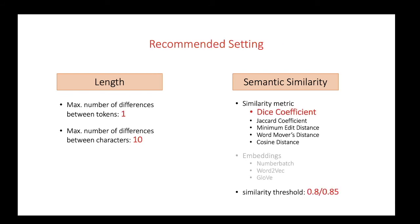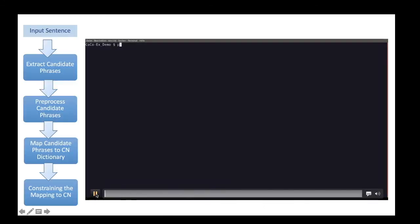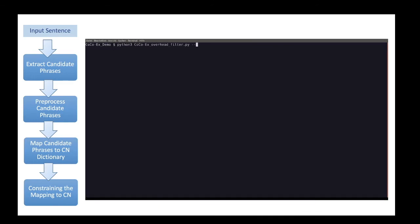In our experiments, we evaluated the output of several configurations manually and found the following configurations to yield the highest coverage and lowest noise, which are also listed in the description of our video. To apply the filtering, run CocoaX_overhead_file.py, define your input file (which is the previous output file), define your output file, and the settings for calculating similarities. The commands and parameters can also be found in the description of the video.